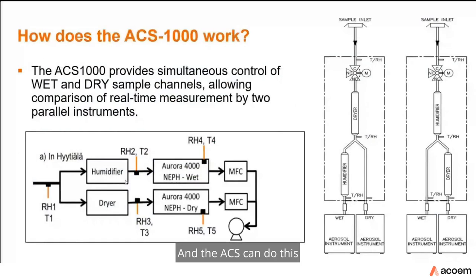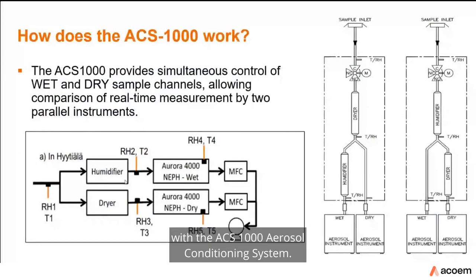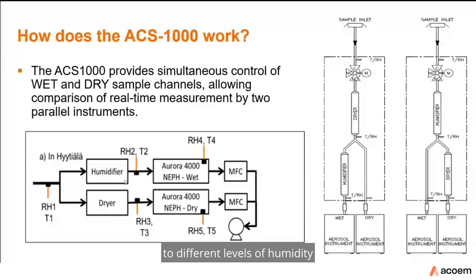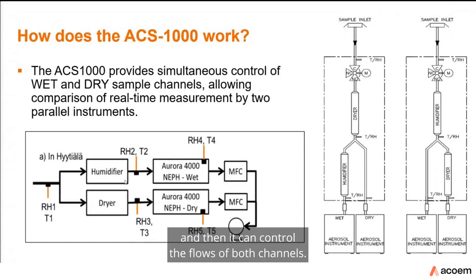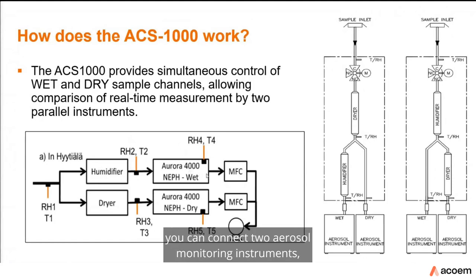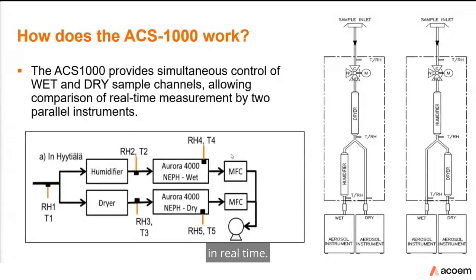The ACS can do this by simultaneously controlling two channels — a wet channel and a dry channel — with the ACS 1000 aerosol conditioning system. It controls the wet channel to different levels of humidity while maintaining the dry channel at a level usually lower than 40% humidity. It controls the flows of both channels, and at the bottom of the ACS you can connect two aerosol monitoring instruments such as Aurora nephilometers to measure scattering properties and calculate hygroscopic growth of aerosols in real time.